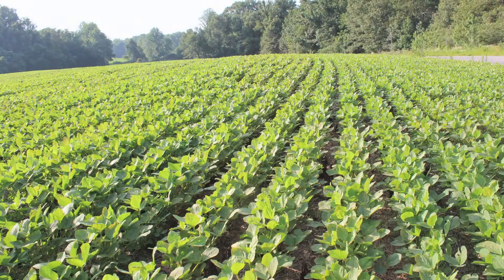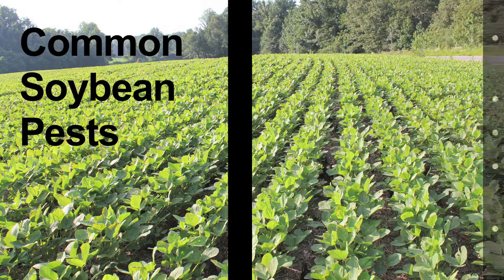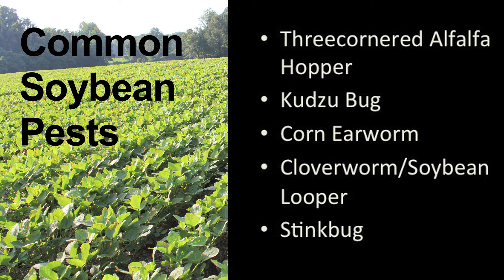We previously did a video on how to sample and specifically how to use a sweep net. Today I want to take a little time to talk about identifying the common pests you're likely to find in that sweep net. Some of these things we're already pretty familiar with — the stink bug complex, green clover worm, soybean loopers, and a few odds and ends. We'll also talk about some invasive insects including the kudzu bug, which is spreading across the state pretty rapidly. We'll discuss these in a logical progression of when they're most likely to occur or cause damage in your field.